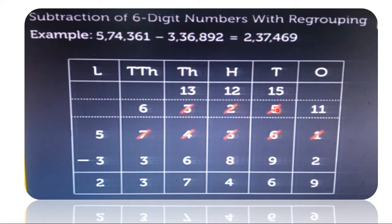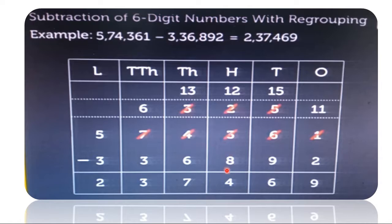At the tens place value we have 5. We couldn't subtract 9 from 5, so we will borrow from the hundreds place. 5 becomes 15. So 15 minus 9, we got difference 6. Now at the hundreds place we have 2. We couldn't subtract 8 from 2, so we will borrow from the thousands place. 2 becomes 12. So 12 minus 8, we got difference 4.